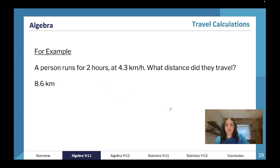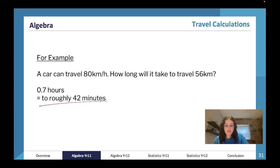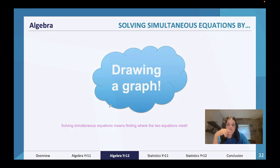A car can travel 80 kilometers an hour - how long will it take to travel 56 kilometers? We have to divide by the 80 kilometer an hour speed. We get 0.7 hours, so you would write roughly 42 minutes. How do we get to that? You can just do 0.7 times 60, which would give you 42. It's very important to always remember there's only 60 minutes because a lot of students get that wrong and they go with 100, and then you write down the wrong minutes.